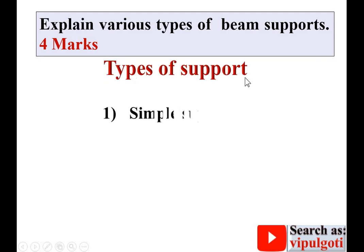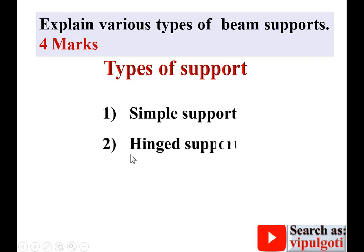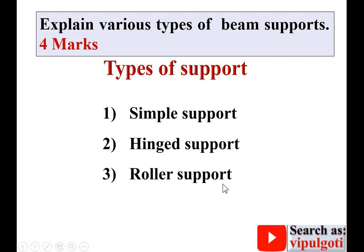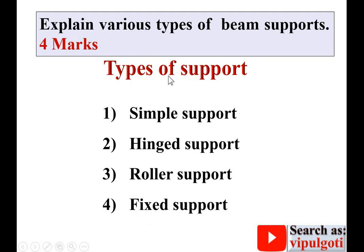Types of support: first is simple support, sometimes called simply supported. Second is hinge support. Third is roller support, and fourth is fixed support. These are the four different types of support for the beam, and we are going to discuss them in detail one by one.